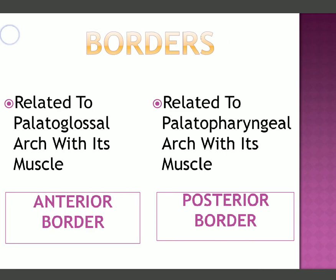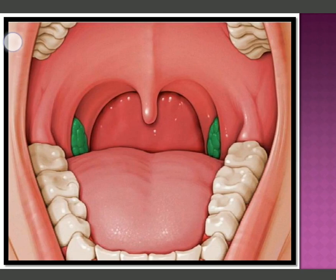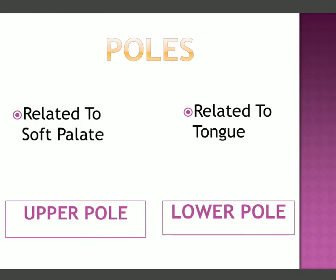There are two borders — anterior and posterior. The anterior border is related to the palatoglossal arch, and the posterior border is related to the palatopharyngeal arch and its muscle. Regarding the poles, the upper pole is related to the soft palate and the lower pole is related to the tongue.